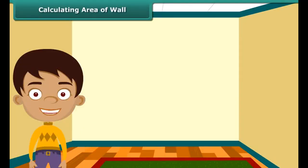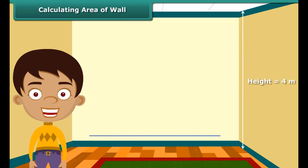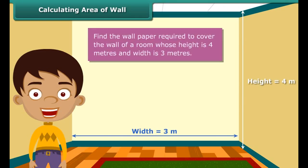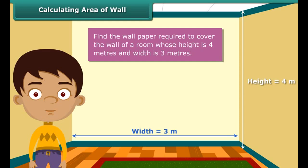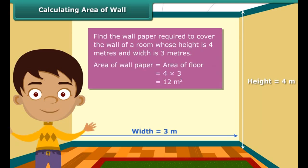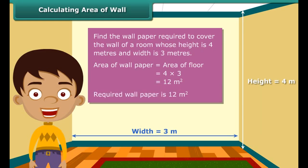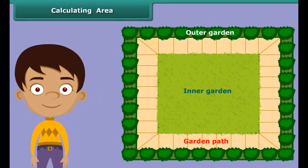Now that we know how to calculate area, let us solve a question based on the concept. Each wall of Nidhi's room is 4 meters high and 3 meters wide. She wants to cover one of the walls with wallpaper and needs to know how many square meters of wallpaper will be required. The area of the wallpaper required will be the same as the area of the wall. The area of the wall is 4 meters multiplied by 3 meters, which is 12 square meters. So 12 square meters of wallpaper will be required.